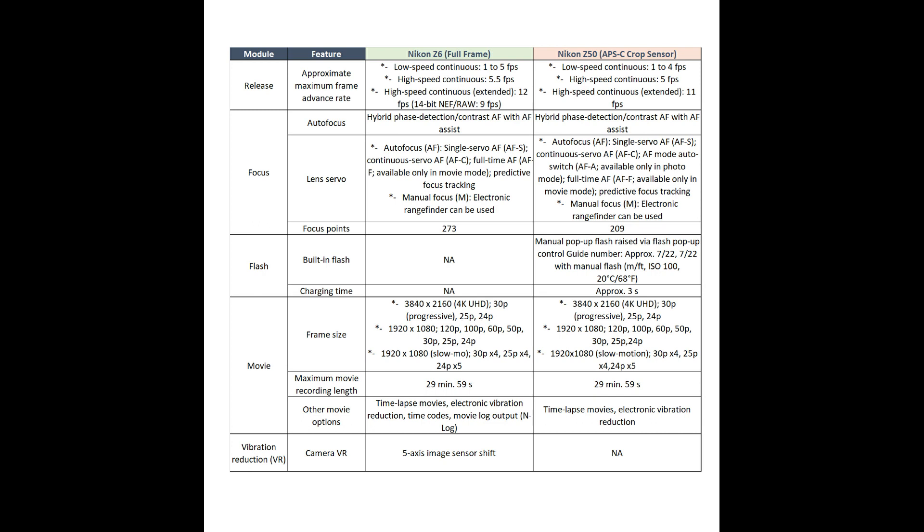For those interested in photographing fast-moving subjects like birds or jet planes, continuous shooting speed is important. The Nikon Z6 can shoot up to 12 frames per second, while the Nikon Z50 can shoot up to 11 frames per second — so a slight edge to the Z6 there.